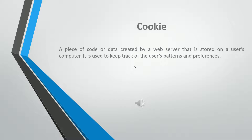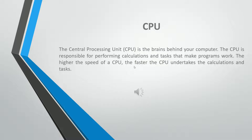A cookie is a piece of code or data created by a web server that is stored on a user's computer. It is used to keep track of the user's patterns and preferences. The central processing unit (CPU) is the brains behind your computer. The CPU is responsible for performing calculations and tasks that make programs work. The higher the speed of a CPU, the faster it undertakes those calculations and tasks.